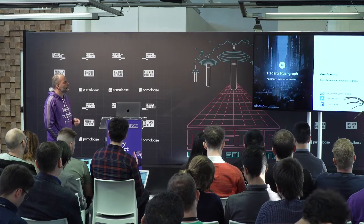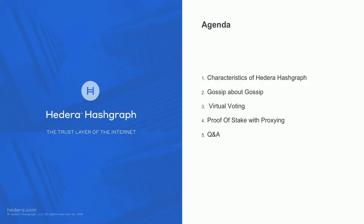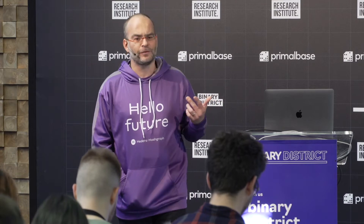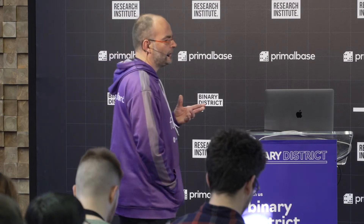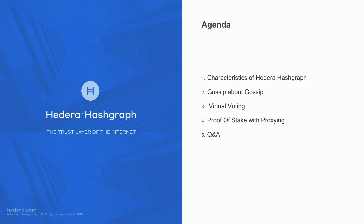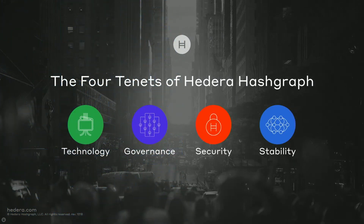I'll cover the characteristics of our consensus protocol rapidly, because I want to get into gossip about gossip and virtual voting — I figured this would be interesting to you as an audience. I'll also talk about proof of stake with proxying, which is how we implement protection against Sybil attacks, and some elements of the incentives for being a node or participating in proxy staking as a coin holder. Then we'll do Q&A if we have time.